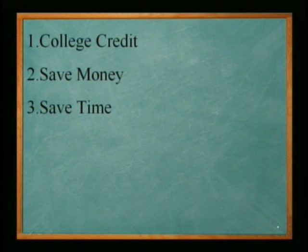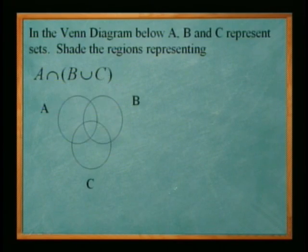Now, I'd like to go through one of the questions from the exam. All right, and this reads, in the Venn diagram below, A, B and C represent sets. Shade the regions representing A intersection of B union C.